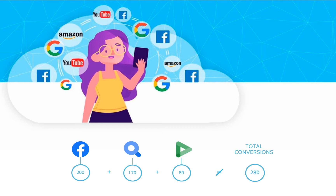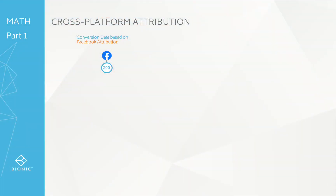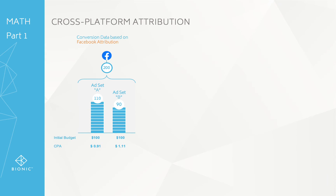So how does this happen, and how does using this data help you improve performance and efficiency of your campaign? Let's take an example where we're just picking Facebook — it could be search or any individual channel. At the end of the first period, Facebook sees that it generated or was responsible for 200 conversions. Imagine you had two ad sets: Ad Set A delivered 110 and Ad Set B delivered 90 conversions.